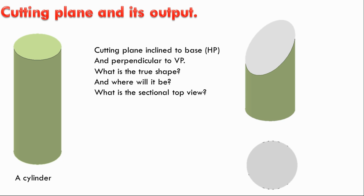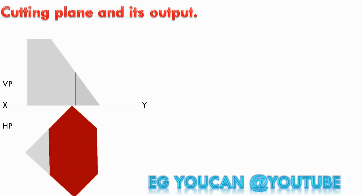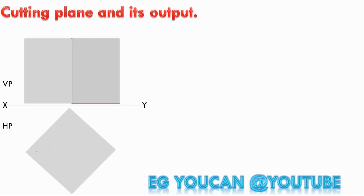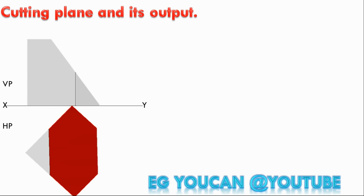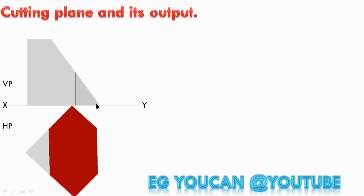One square — that is a cube. Cutting plane gives a hexagon. What are the cutting conditions? The cutting plane passes through the middle point of each vertical edge. True shape output is a hexagon.